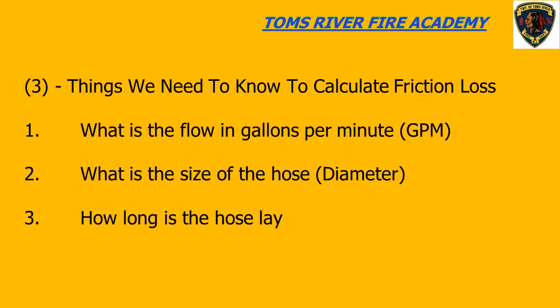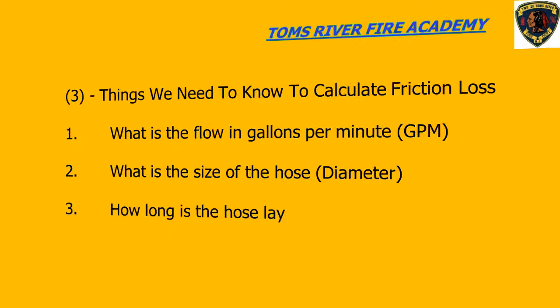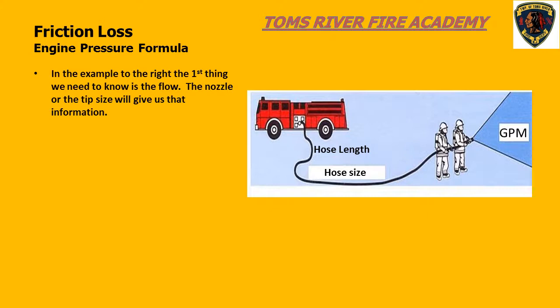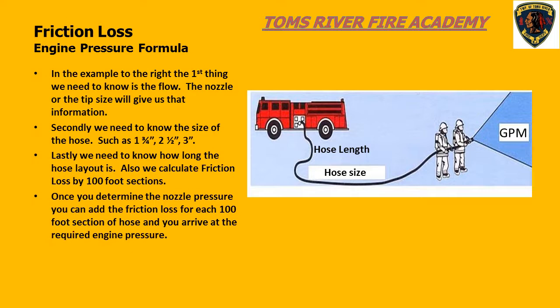In order to calculate friction loss, we need to know three things: first, the gallons per minute or the flow; second, the size of the hose in diameter; and last, the length of the hose lay. In this slide, we can see an illustration of these three things. The nozzle gives us the GPM, we can see the hose size, and we need to know how long the hose lay is.